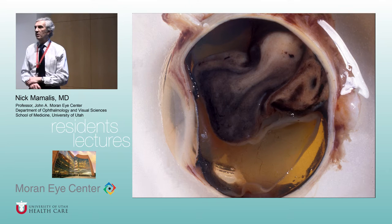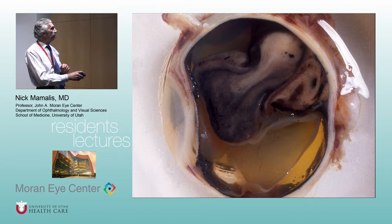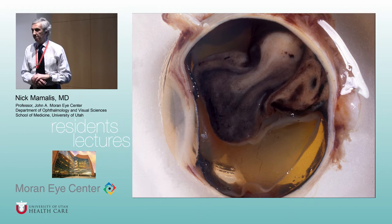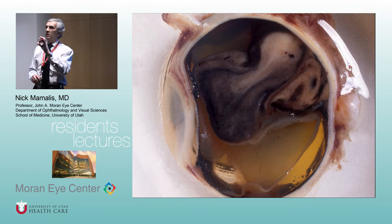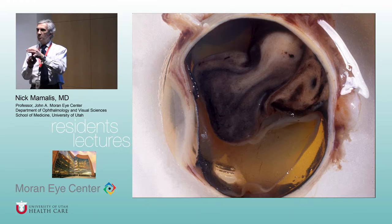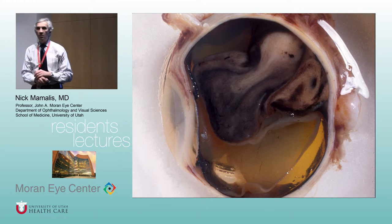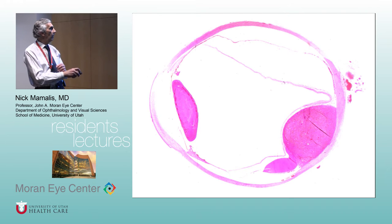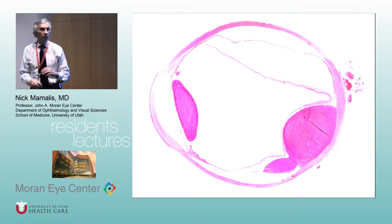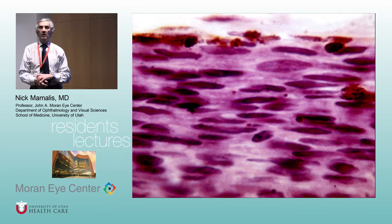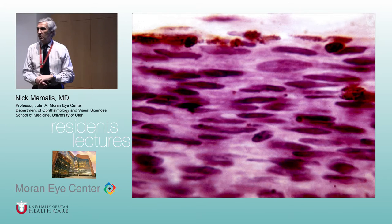Cell types one more time. First, spindle A — spindly nuclei, no nucleoli, indistinct cytoplasm, no clean cellular borders — we call this almost a nevus. Spindle B: slightly cigar-shaped cells, you start to see nucleoli, still indistinct cytoplasm, cell borders run together. Then epithelioid: these are bigger cells, lots of disruption of the nucleus, visible chromatin, multiple nucleoli, and now you can see distinct cellular borders. Even multinucleated cells. Epithelioid is the main prognostic factor — pure spindle tumors have the best prognosis, mixed spindle-epithelioid have moderate prognosis, pure epithelioid have the worst prognosis.